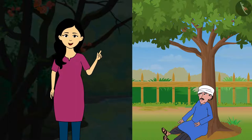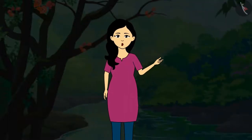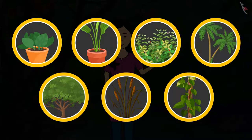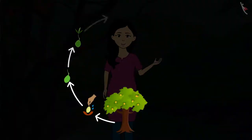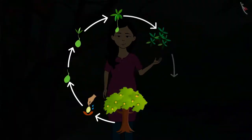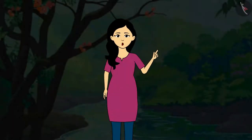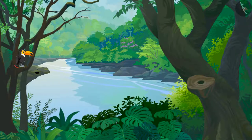We all must have heard or read this poem. But have you thought about how trees and plants continue their species? We all know that plants grow from seeds. But did the seed come first or the plant? We all know that we resemble our parents. Do these plants, fruits, and leaves look like the plants they grow from?